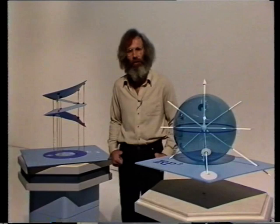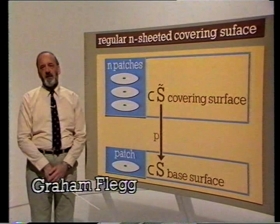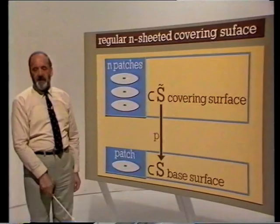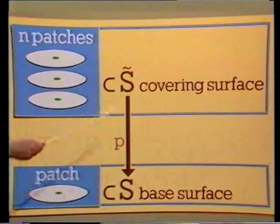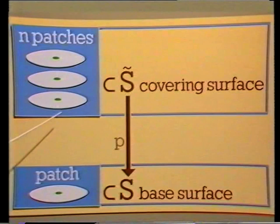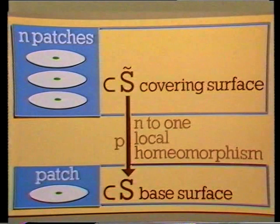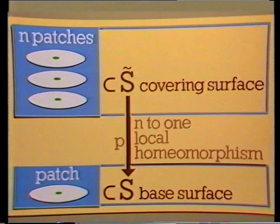Actually, both these examples are what we call regular two-sheeted covering surfaces. You'll see later what we mean by irregular. It's time now to look at the general definition of a regular covering surface. We have two surfaces: S tilde, the covering surface, and S, the base surface, and we have a map P from S tilde to S, the projection map. For each little patch on the base surface, we have exactly n patches lying above it in the covering surface. More precisely, the map P is an n-to-one map which is a local homeomorphism. This includes the case n equals 1, when the map is actually a homeomorphism, so n can be any integer greater than or equal to 1.